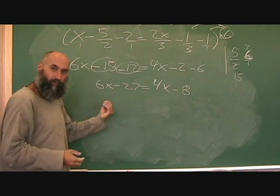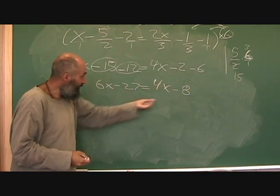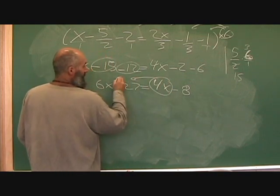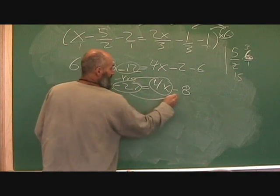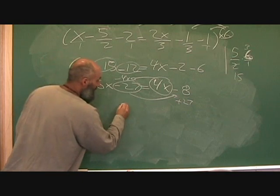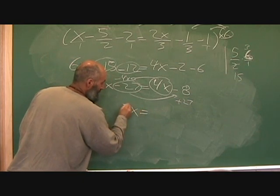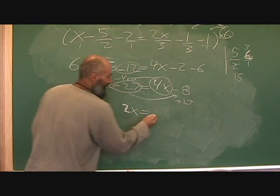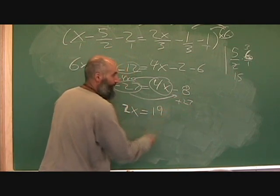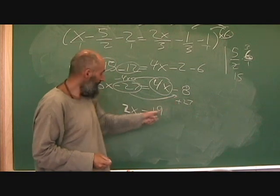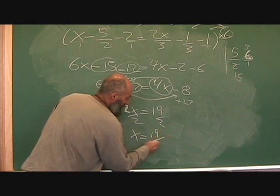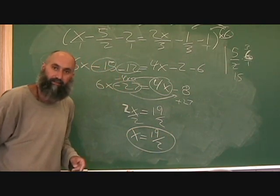Bring all your x's to one side and your numbers to the other. Bring like terms together: minus four x, and bring over plus twenty-seven. Six x minus four x is going to be two x. Over here, twenty-seven minus eight is nineteen. Divide by two, divide by two. So x is equal to nineteen over two. And that's your final answer.